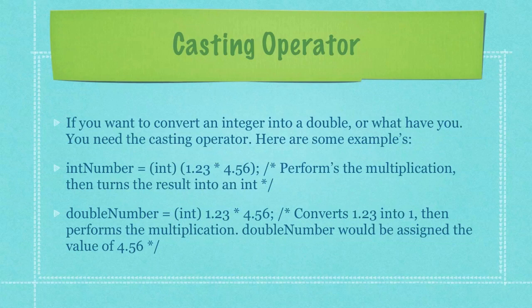But this cast is not going to cast the value of 4.56 because I don't have the cast in front of that specific number. It's just making that change to the first integer. So in this specific example double number would be assigned the value of 4.56.